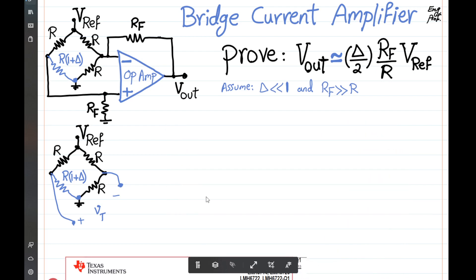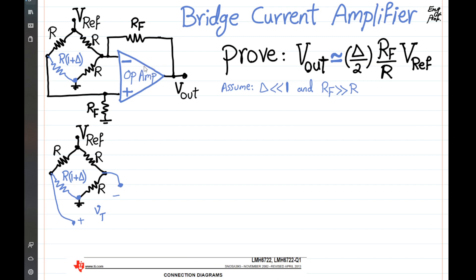With that in mind, and with the op-amp properly biased — positive and negative supplies properly connected so the op-amp is operating in its linear region — we assume the virtual short is valid, meaning the voltage at the positive input terminal equals the voltage at the negative input terminal. Let's call this equation one.